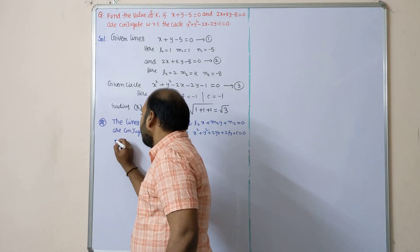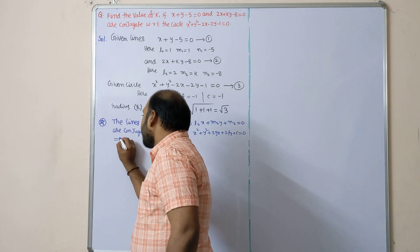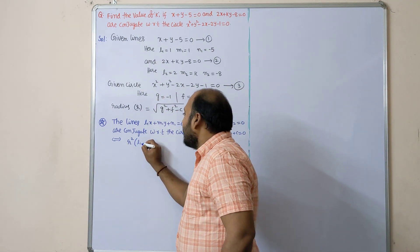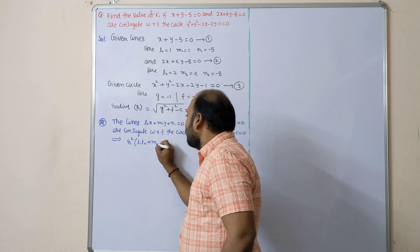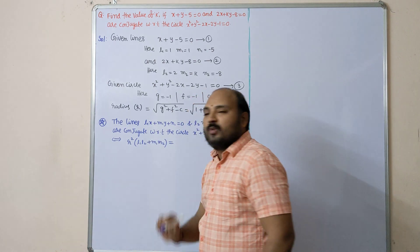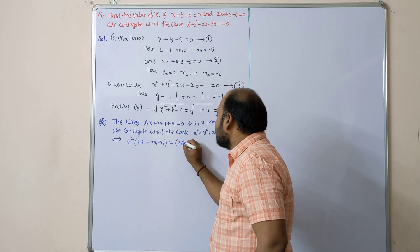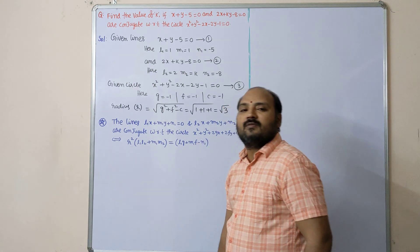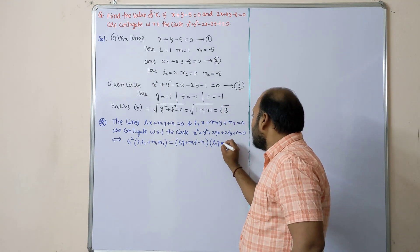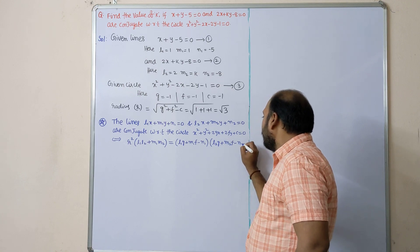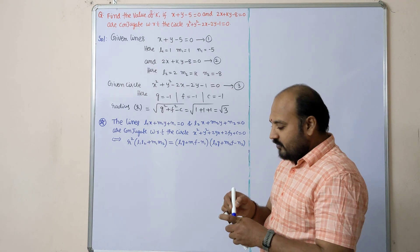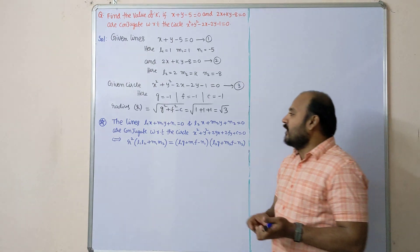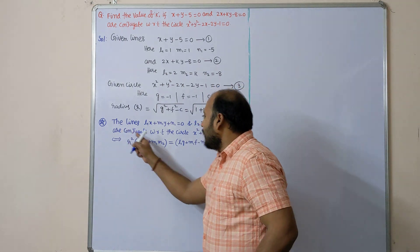r² (l1·l2 + m1·m2) = (l1g + m1f - n1)(l2g + m2f - n2). So this is the formula to apply to get the value of k in the given lines. This is a very important formula dear students.